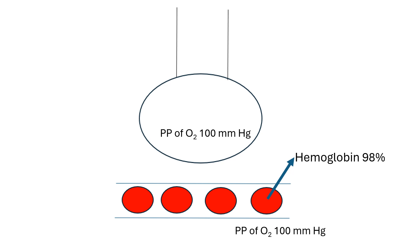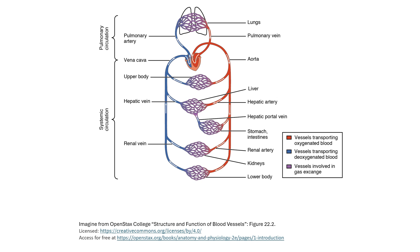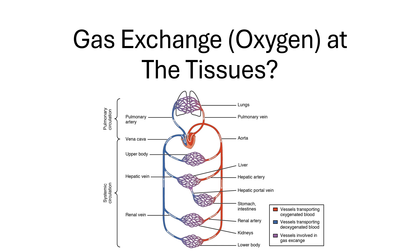Once blood has traveled past the alveoli, it is said to be oxygenated. In oxygenated blood, the blood plasma will have a partial pressure of oxygen of 100 millimeters of mercury, the intracellular fluid of the red blood cells will have a partial pressure of 100 millimeters of mercury, and the hemoglobin within the red blood cells will be 98% saturated. Lots of oxygen has been picked up at the lungs, but it is being transported by hemoglobin within the red blood cells — not in the blood plasma or intracellular fluid. Oxygenated blood will then return to the left side of the heart through the pulmonary veins, where it will be pumped into the systemic circuit to deliver oxygen to the tissues.